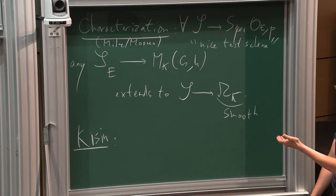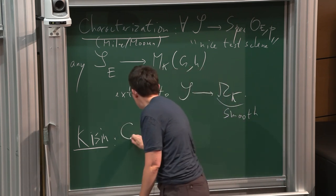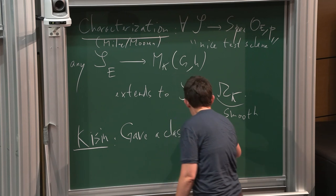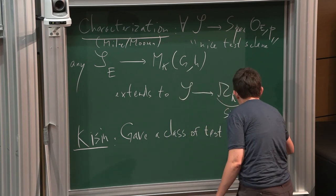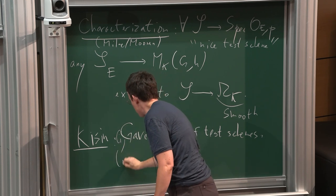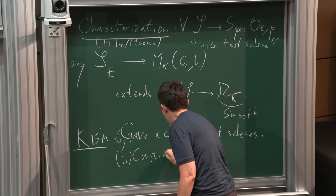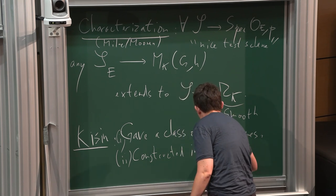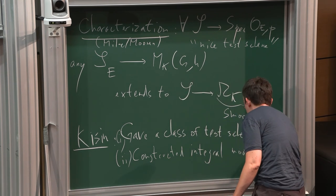Then Kisin gave a class of test schemes and constructed these integral models in Abelian type.